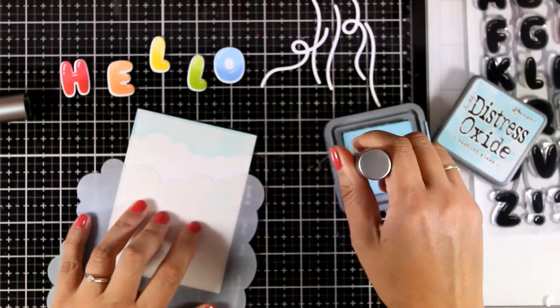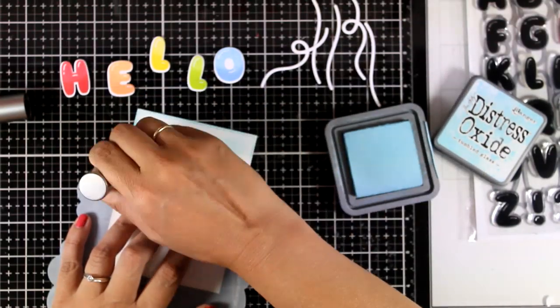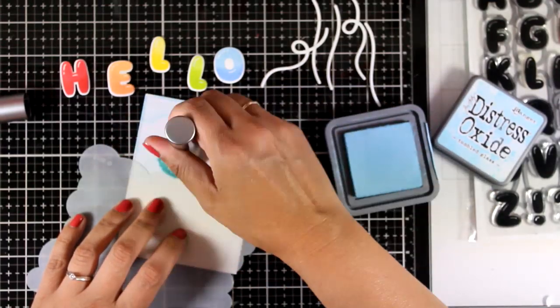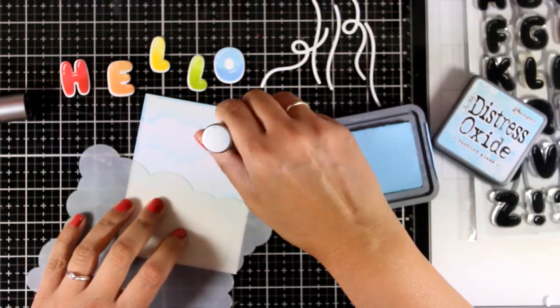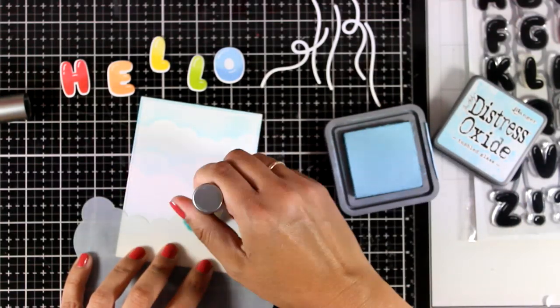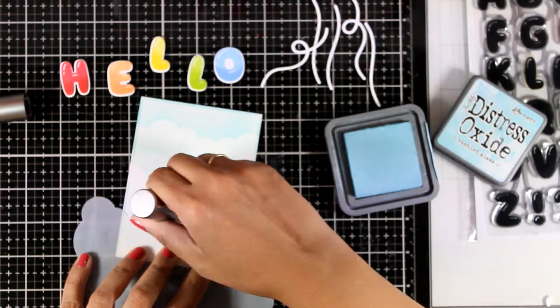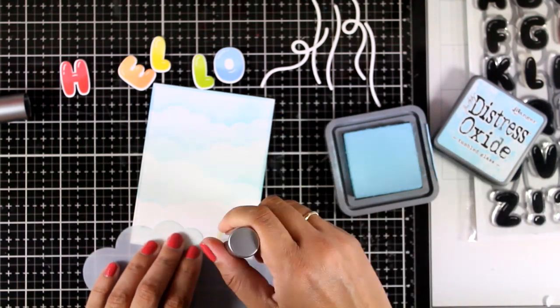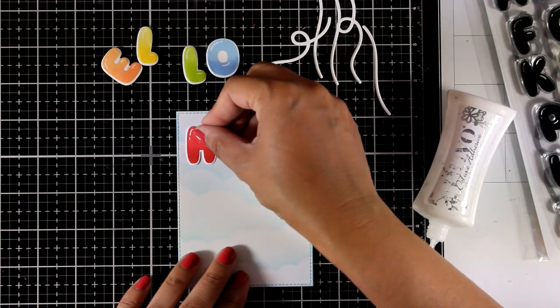Now I am going to create a background. Here I have a white panel which is slightly smaller than a standard card. I am using an older stencil by My Favorite Things and with my brush I am going over it using Distress Oxide Ink. It is a really fun technique and super easy to do and I go back to it again and again when I want to create a lovely sky.